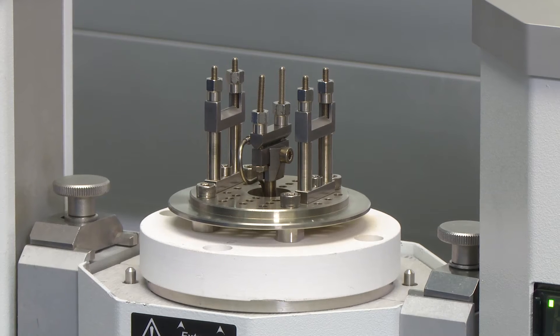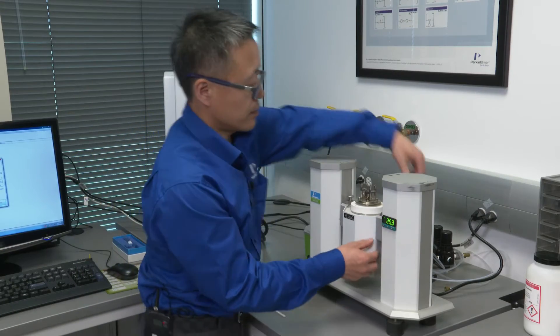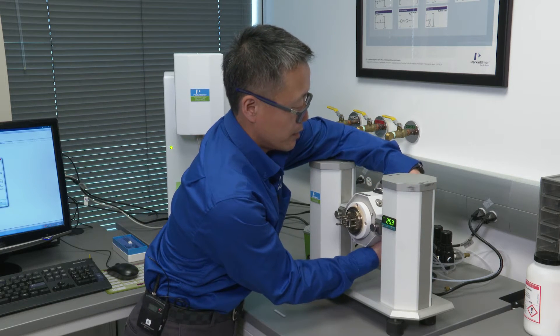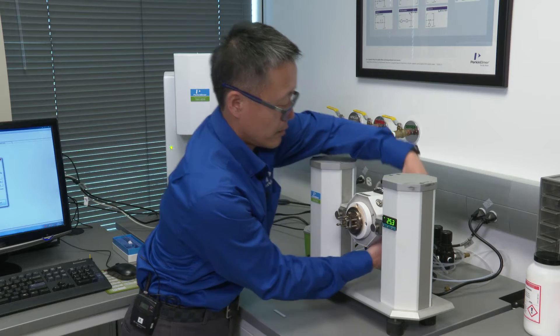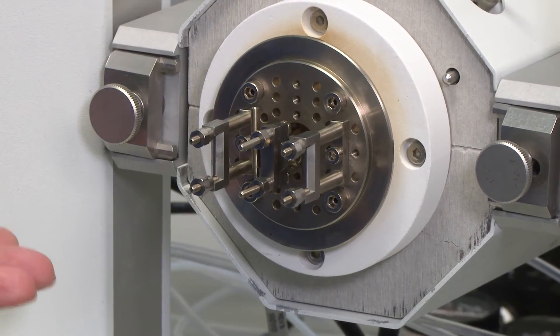Now the center knife is installed. Then you need to turn this to the horizontal position and calibrate the probe position.